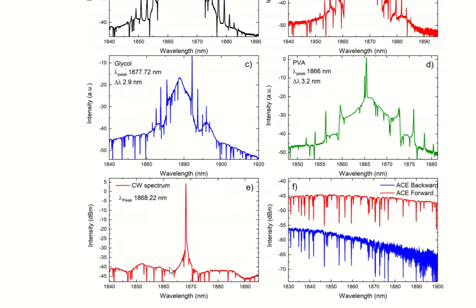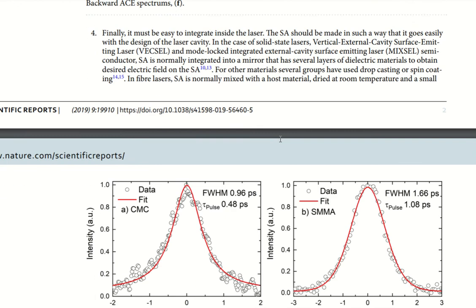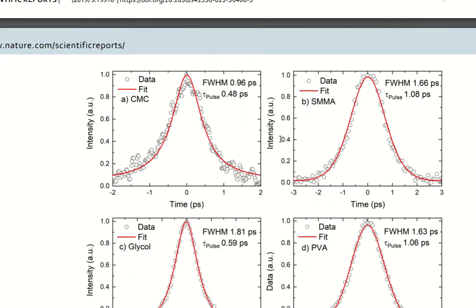If you have just CW laser, then the spectrum will be very narrow. You can see the spectrum in this case is extremely narrow in comparison to all other cases. Another property that is very important to measure is the pulse duration of your laser pulses. If it is ultrashort pulses, then the pulse duration will be in the picosecond range. As you can see here, they all are in picosecond range.